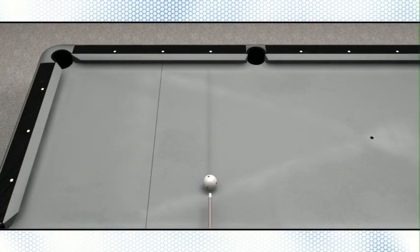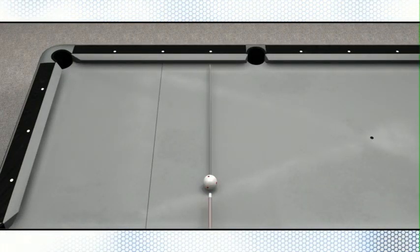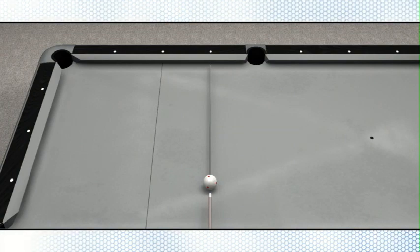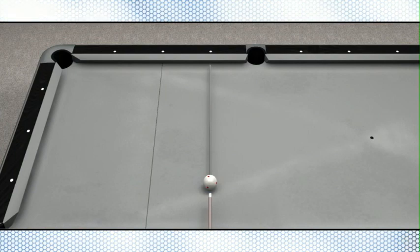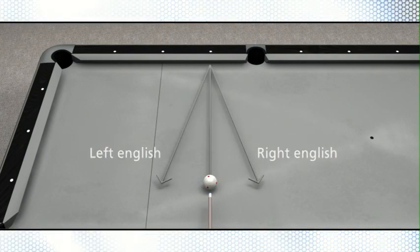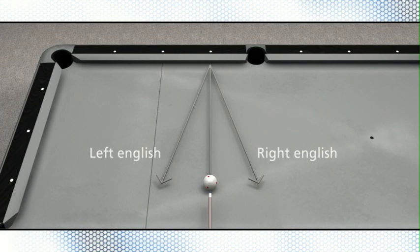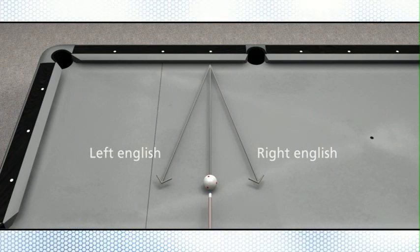If you were to aim directly across the table using the diamonds as a guide, the natural roll of the cue ball with no English will bring the cue ball straight back to you. Applying left English to this same shot will cause the cue ball to come off the cushion and head to the left, while right English will cause it to go right.